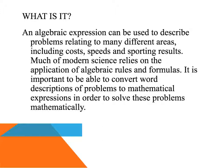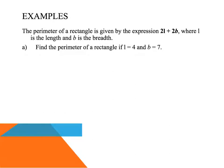So what kind of worded problems are you going to have to solve? Well, let's have a look. The first question says the perimeter of a rectangle is given by the expression 2L plus 2B, where L is the length and B is the breadth. Find the perimeter of a rectangle if L equals 4 and B equals 7.